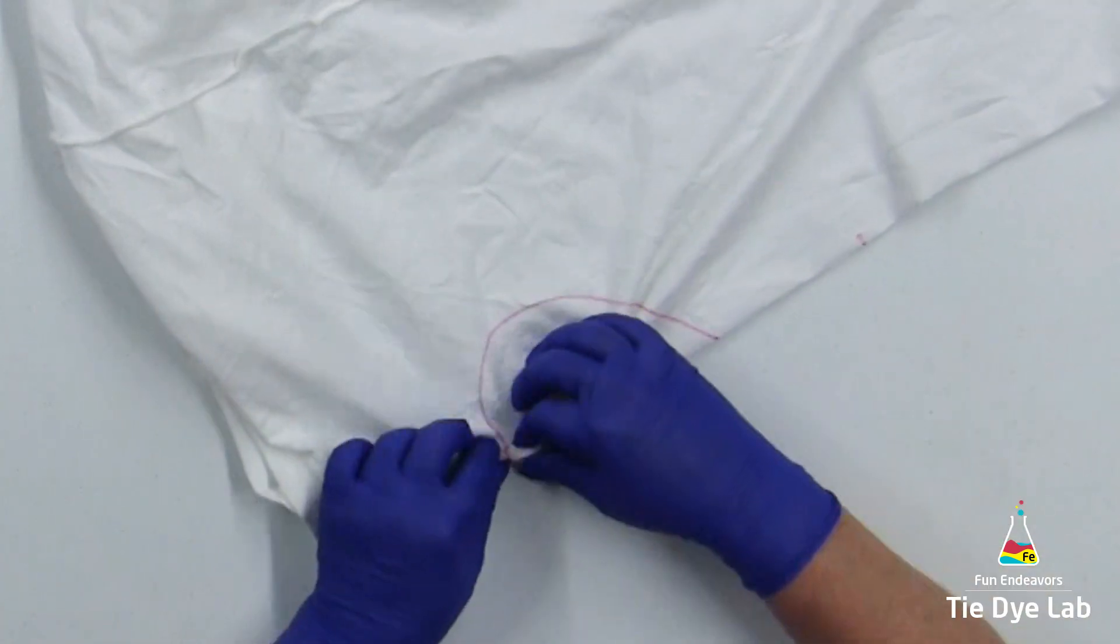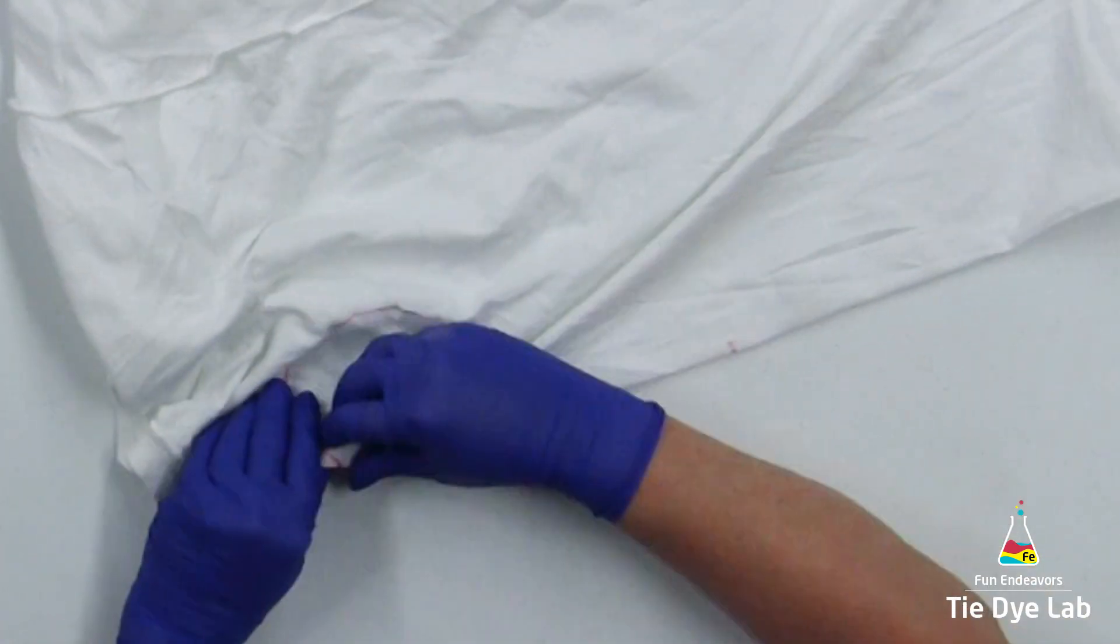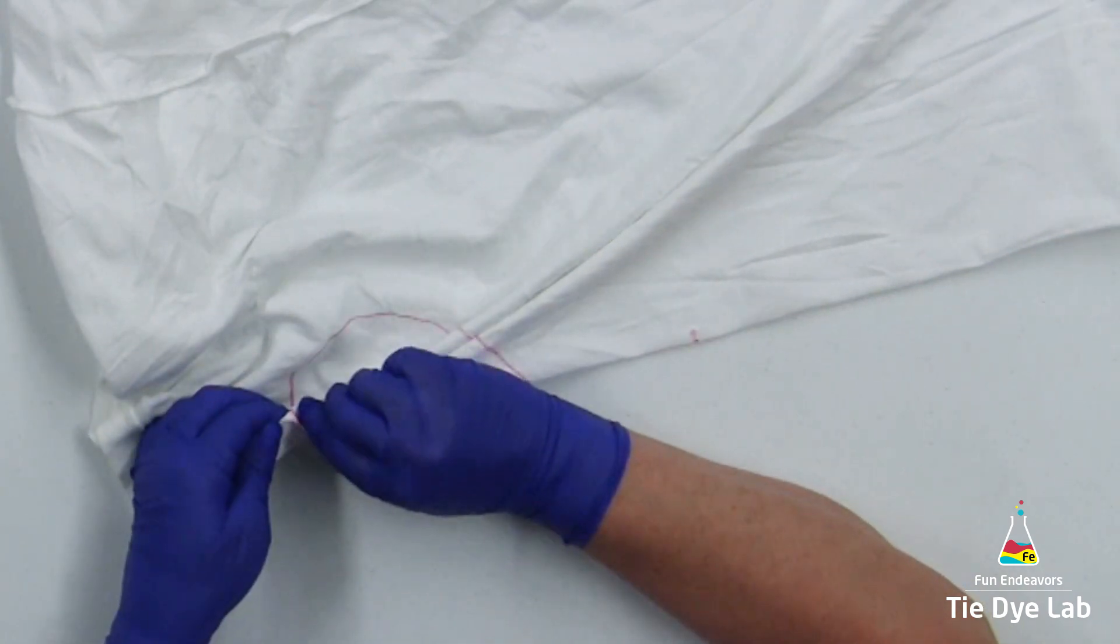Once the line is folded, I'm going to hold the folds in place with some sinew. The sinew that I use is an artificial sinew that's wax coated.